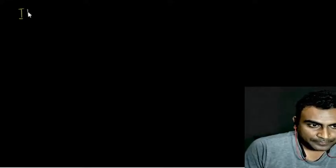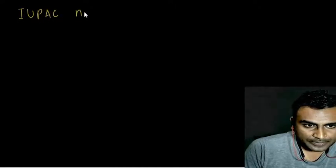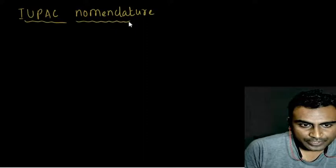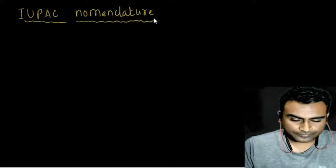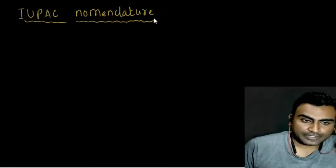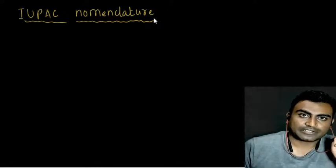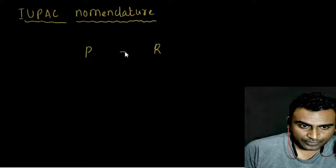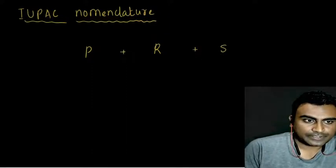So, IUPAC nomenclature consists of basically three different parts: prefix, root word, and suffix.